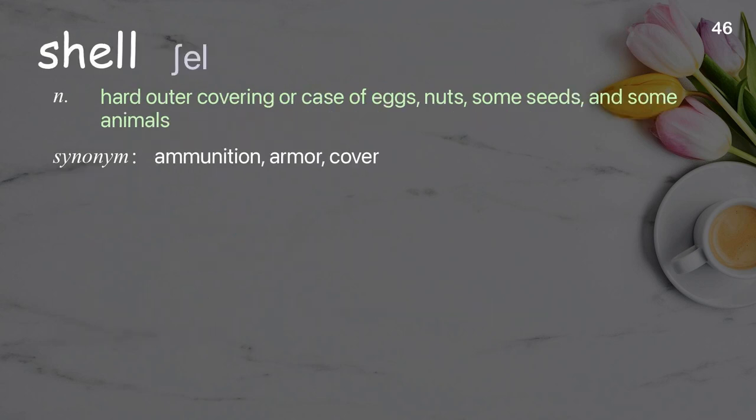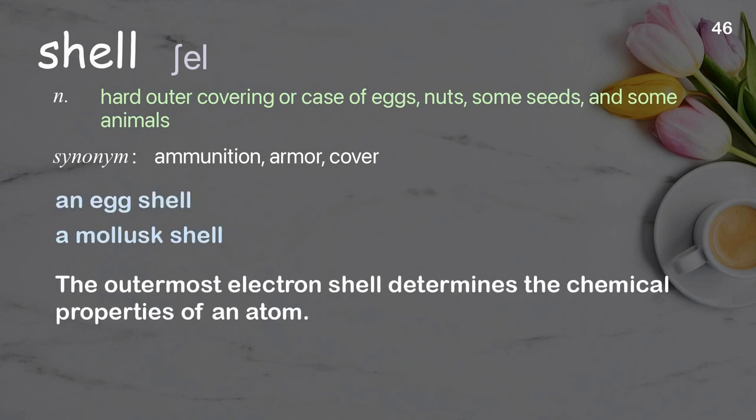Shell: the hard outer covering or case of eggs, nuts, some seeds, and some animals. Examples: an egg shell, a mollusk shell. The outermost electron shell determines the chemical properties of an atom.